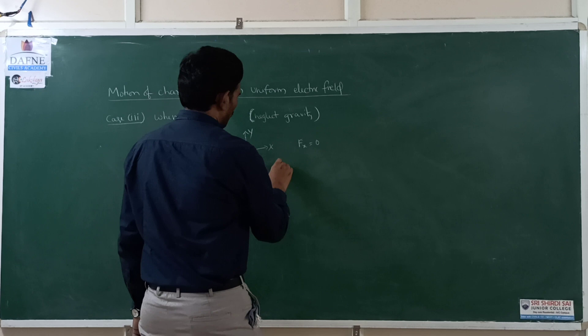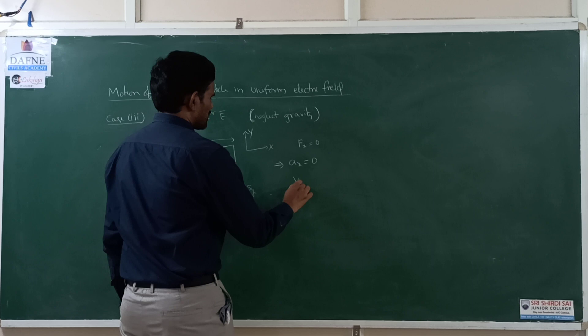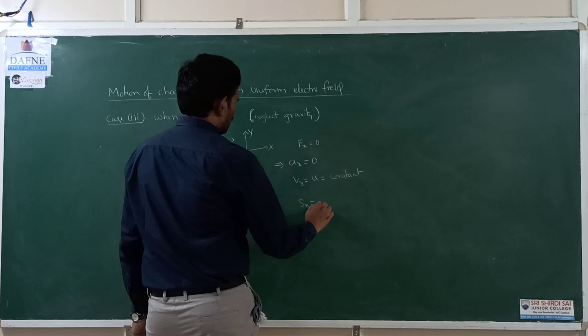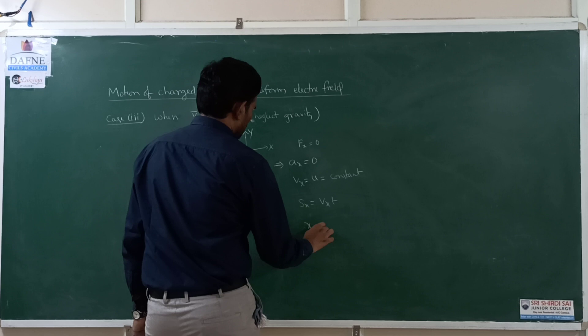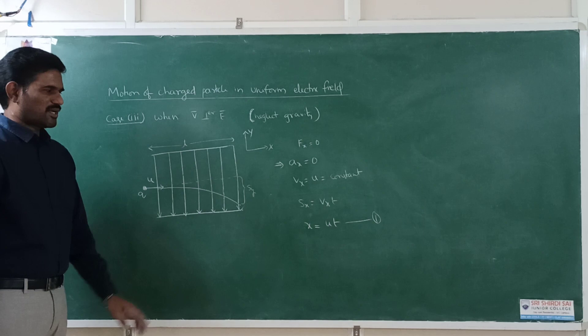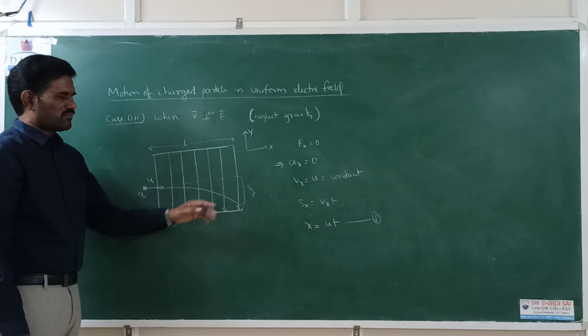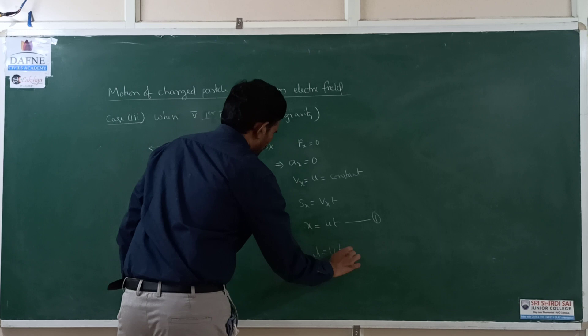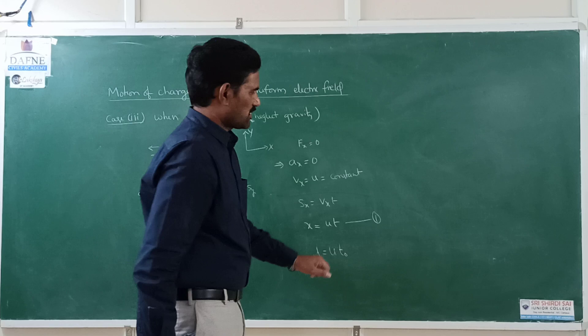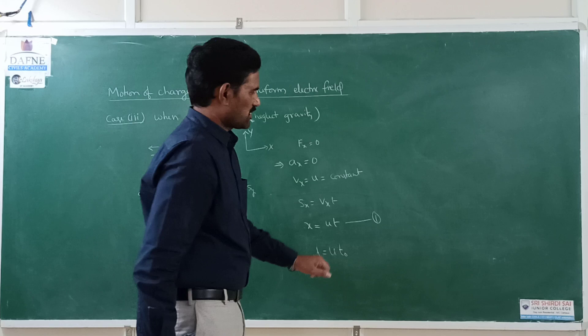Along the x-direction: force = 0, so acceleration = 0, and velocity vₓ = u (constant). Displacement along x at any instant: x = u·t. If the particle takes time t₀ to completely exit the plates, then L = u·t₀. These are the equations along the x-direction.